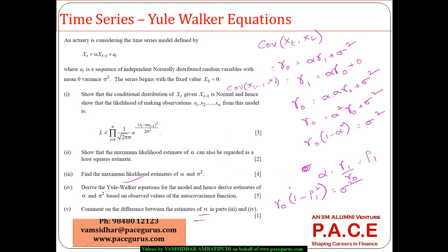Commenting on the difference between the two estimates of alpha: from Yule-Walker, alpha equals gamma 1 over gamma 0; from MLE, alpha equals the summation of xi times xi minus 1 divided by the summation of xi minus 1 squared. When we expand gamma 1 as the summation of (xi minus x-bar)(xi minus 1 minus x-bar) and gamma 0 as the summation of (xi minus x-bar) squared, if x-bar is very small, the Yule-Walker estimate reduces to the same expression as the MLE estimate.